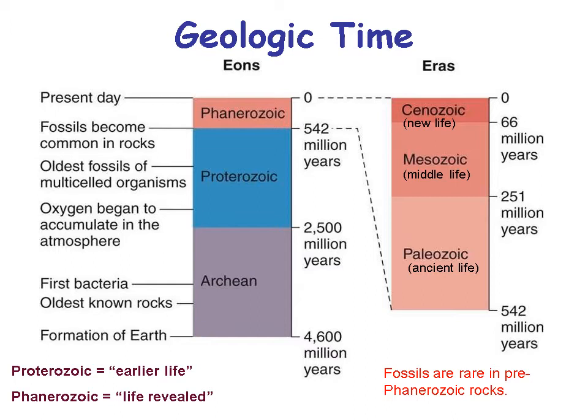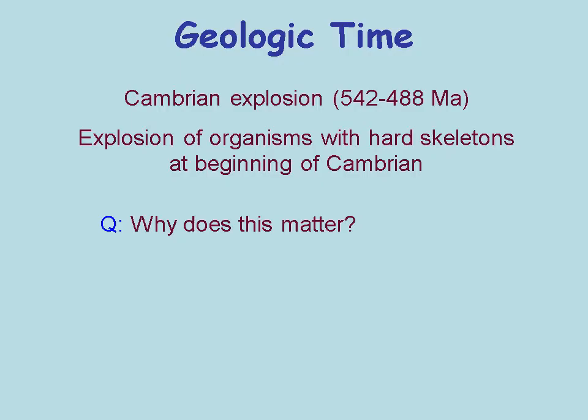Before the Proterozoic, in the Archean eon, we did have life — it was bacteria. One of the things God did during that time was put types of life on Earth that would help build oxygen and help create a breathable atmosphere. The Proterozoic is 'earlier life,' and the Phanerozoic is 'life revealed.'